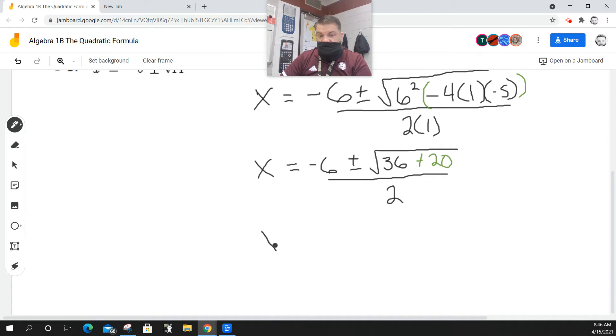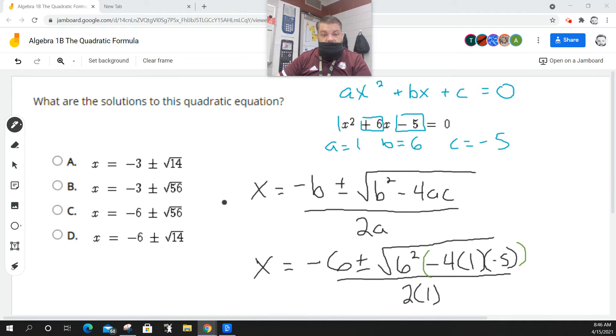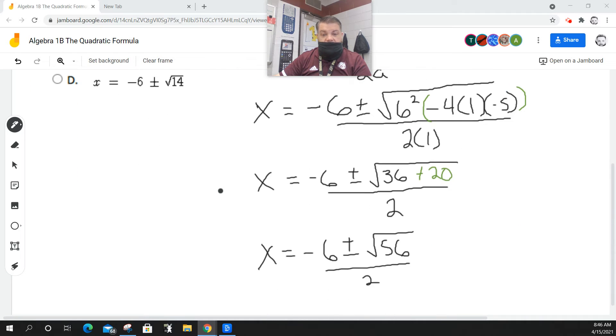All right. So, then I got x is equal to negative six plus or minus the square root of 56 all over two. So, we are almost done. We're trying to simplify this as best we can. I look. None of those are the answers. Well, one of them is, I think.